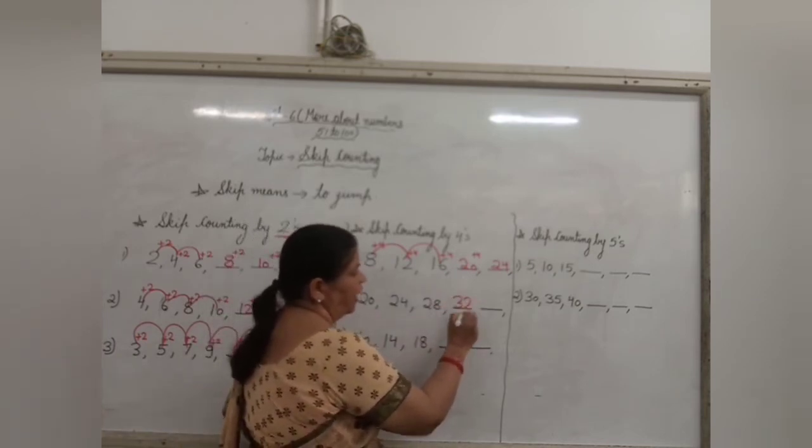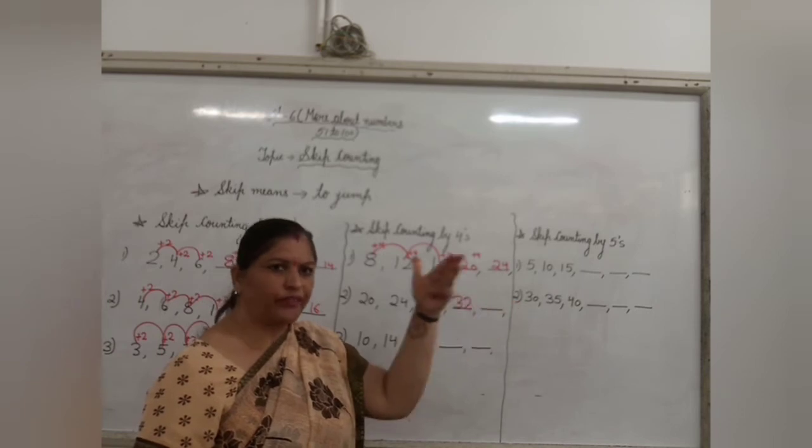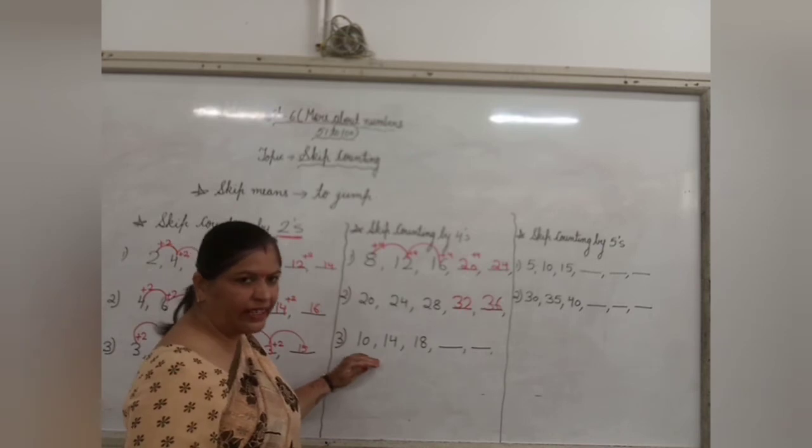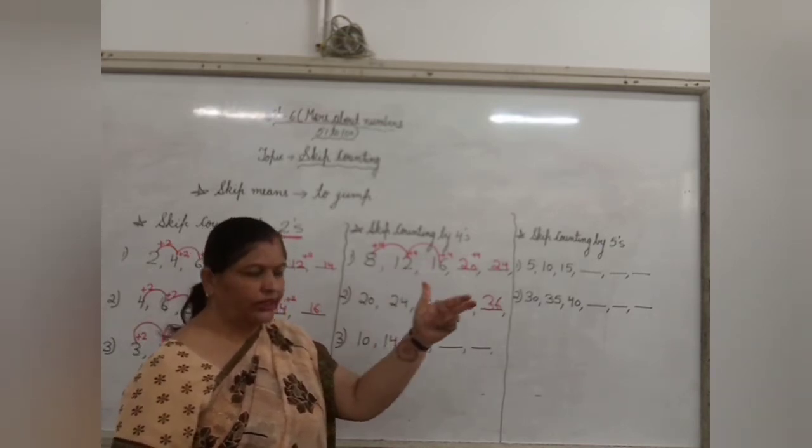So 32 will come. After 32, 33, 34, 35 and 36. So 36 will come. Next one is 10. After 10, 14. 11, 12, 13, 14.